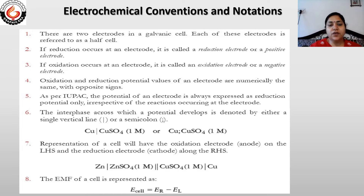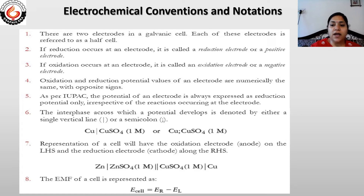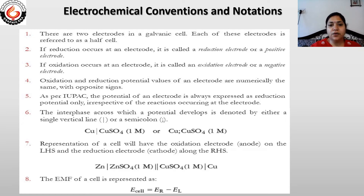First convention: there are two electrodes in a galvanic cell, each referred to as a half cell. One half cell acts as anode and another acts as cathode; combining the two forms a complete galvanic cell. Second point: if reduction occurs at an electrode, it is called a reduction electrode or a positive electrode. Third point: if oxidation occurs at an electrode, it is called an oxidation electrode or a negative electrode.